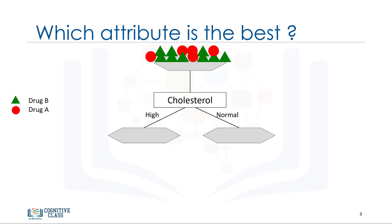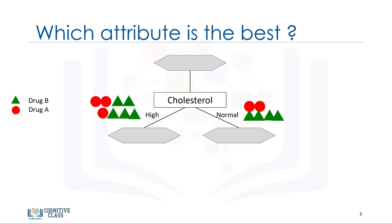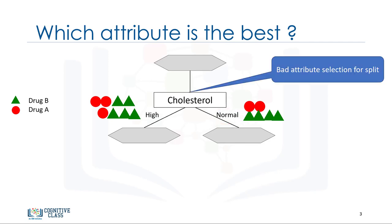Let's say we pick cholesterol as the first attribute to split data. It will split our data into two branches. If the patient has high cholesterol, we cannot say with high confidence that drug B might be suitable for him. Also, if the patient's cholesterol is normal, we still don't have sufficient evidence to determine if either drug A or drug B is suitable. This is a sample of bad attribute selection for splitting data.